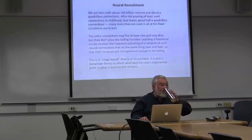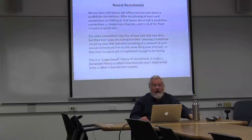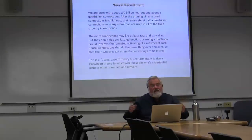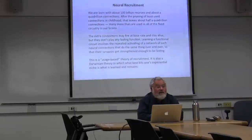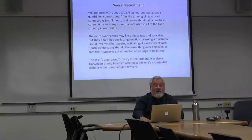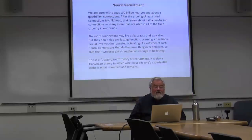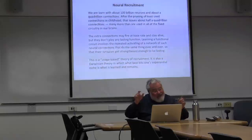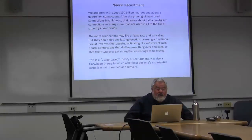The first basic idea is neural recruitment. How do we learn a new circuit? We're born with about 100 billion neurons giving roughly 1,000 to 10,000 connections each — about a quadrillion connections. After pruning of least-used connections in childhood, about half a quadrillion connections remain, far more than used in all fixed circuitry in our brains. Learning a functional circuit involves repeatedly activating a network of neural connections that do the same things over and over, so their synapses get strengthened enough to be lasting — a usage-based and Darwinian theory of recruitment.